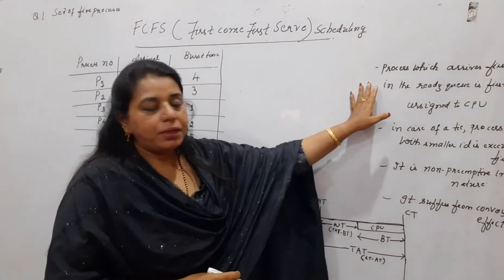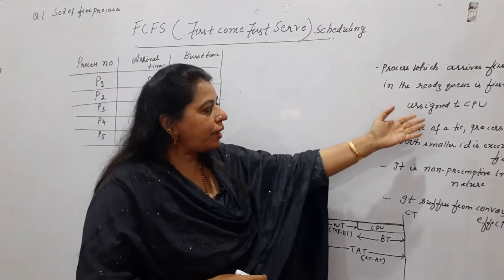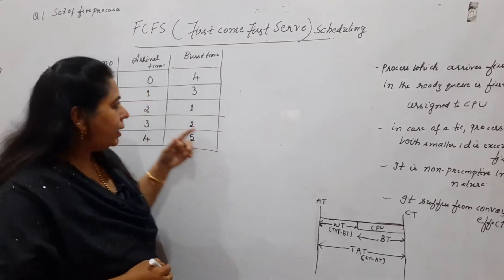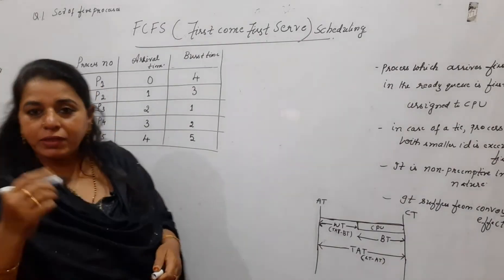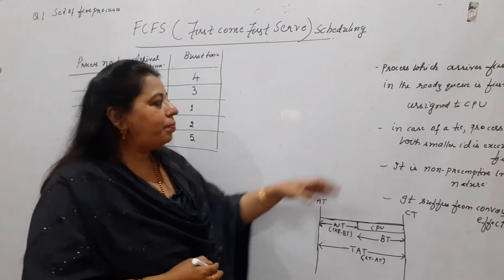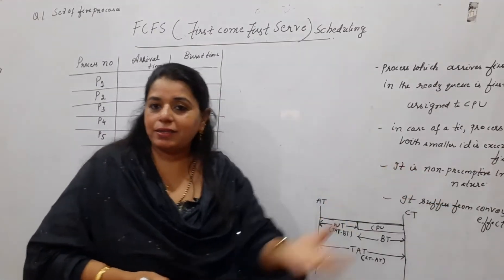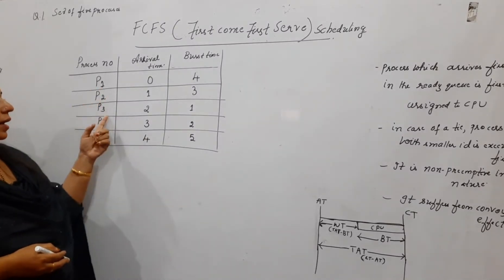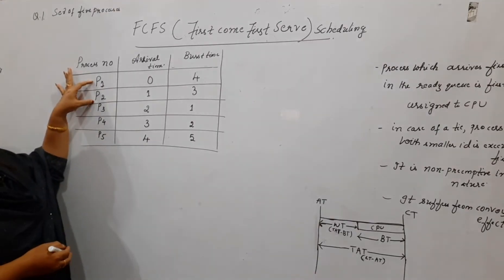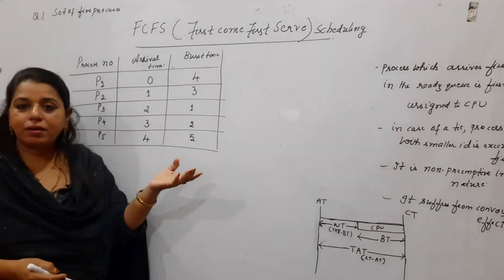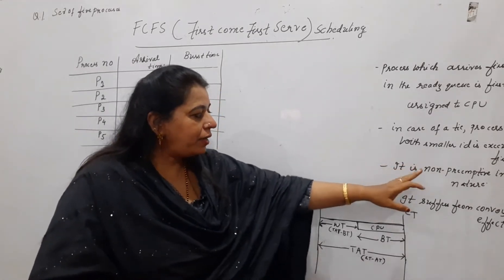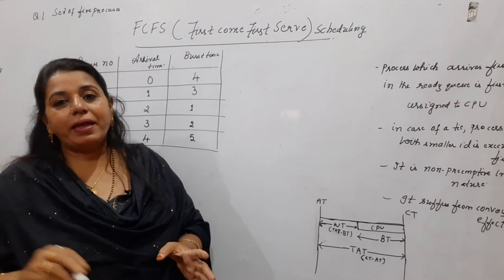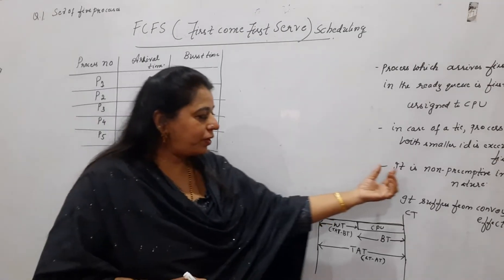The first thing to know about this algorithm: a process which arrives first in the ready queue is firstly assigned to the CPU. That is the main functionality of this particular scheduling. In case of a tie, the process with the smaller ID is executed first — if P1 and P2 arrive at the same time, then P1 will be assigned to the CPU. It is non-preemptive in nature, meaning once assigned to the CPU the process will complete its job and then the processor is deallocated.